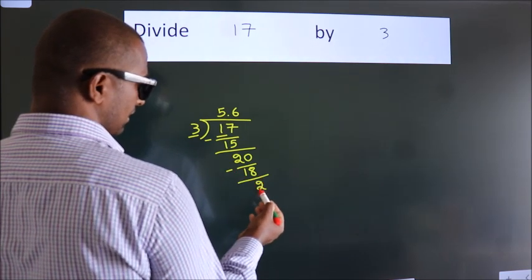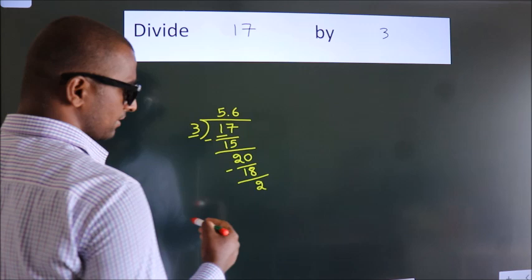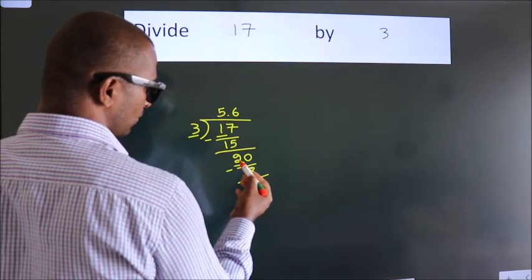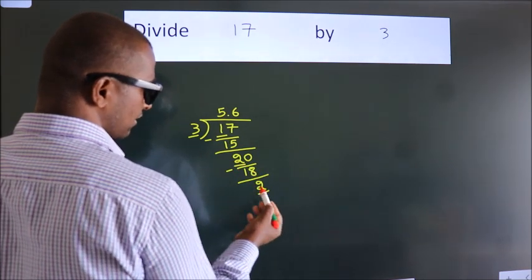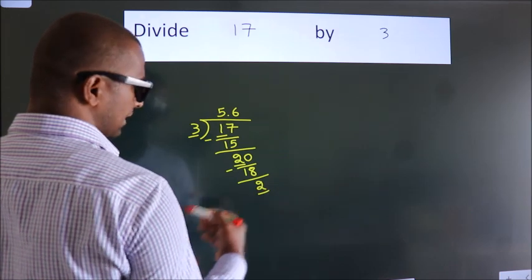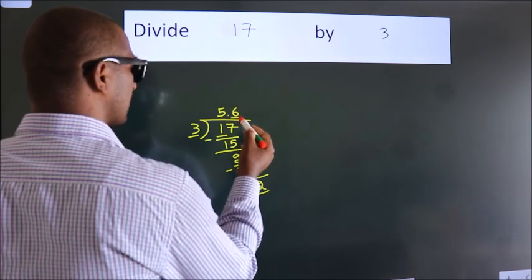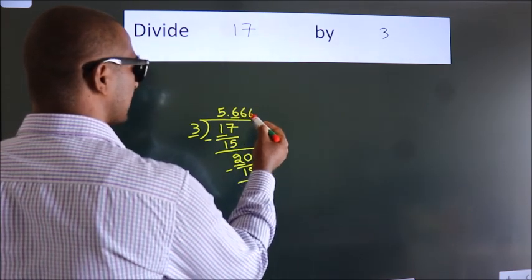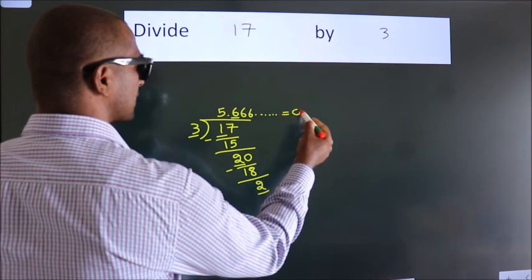After this, now you observe. Here we had 2, and we got 2 again. That means this number keeps on repeating. So, this is our quotient.